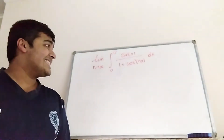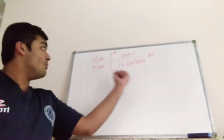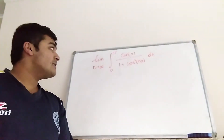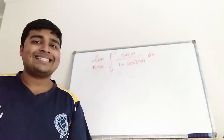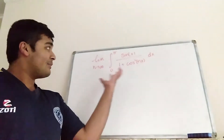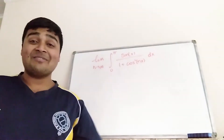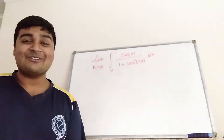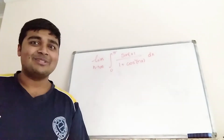I want to find the limit as n goes to infinity of the integral from 0 to π of sin(x) divided by 1 plus cosine squared(nx) dx. If you want to have a go at evaluating this integral, give it a go for yourself, and I'm going to get stuck into a solution.